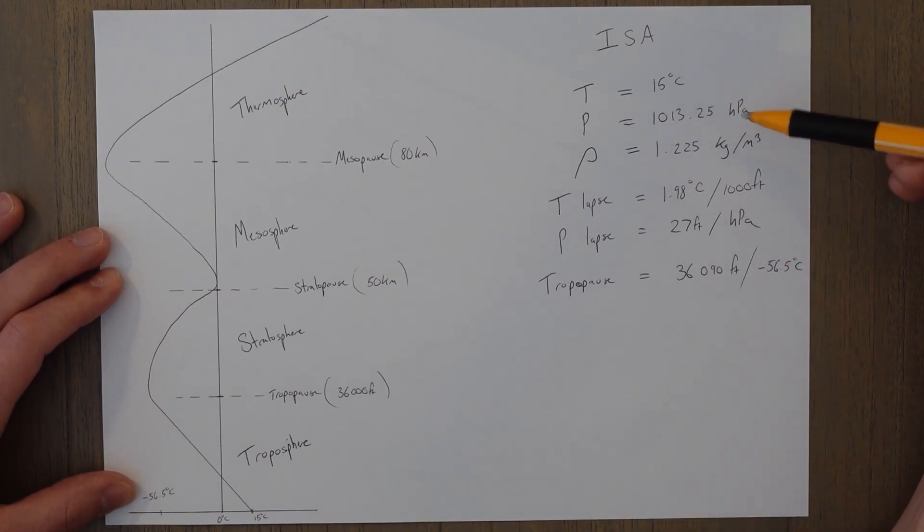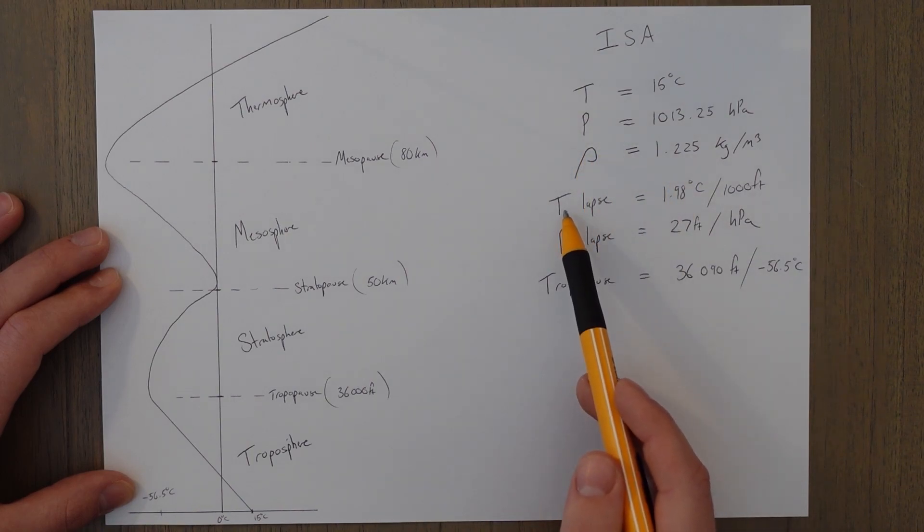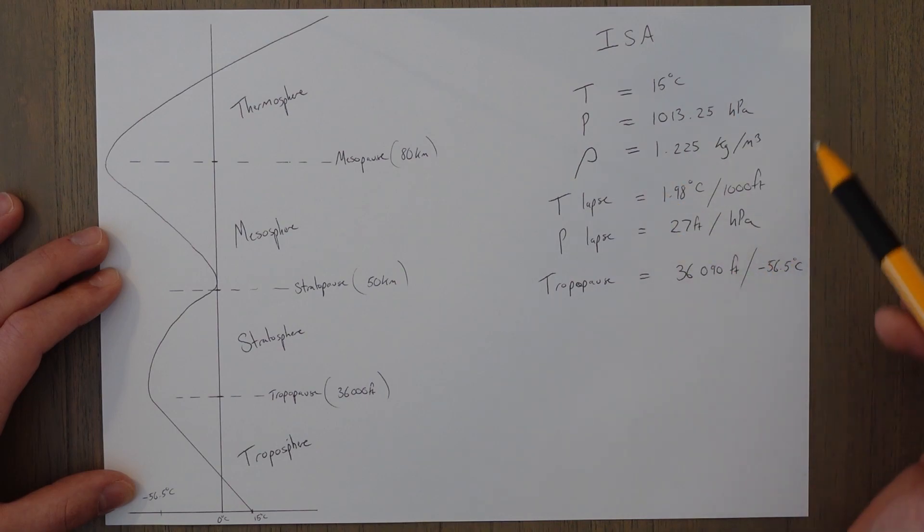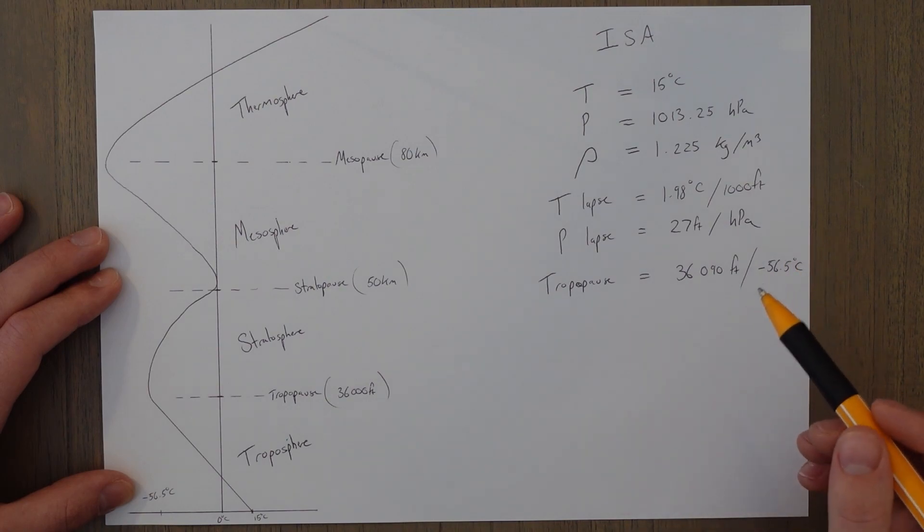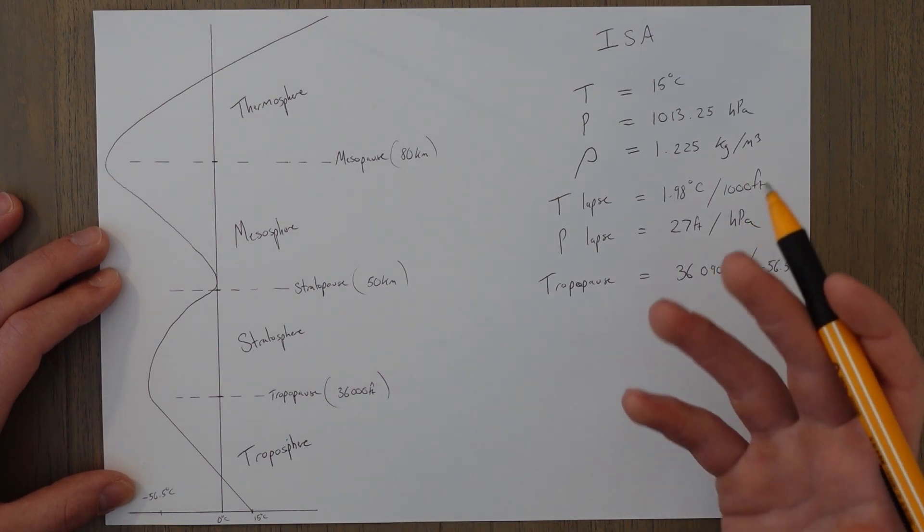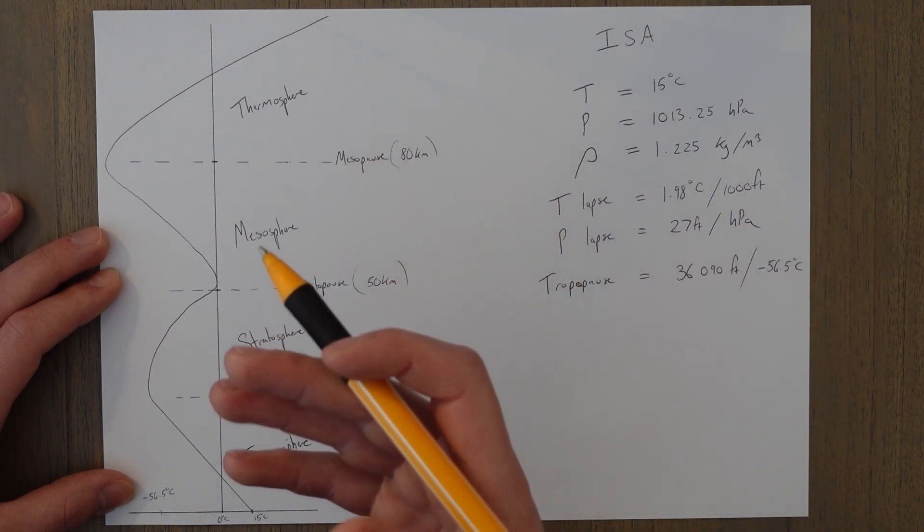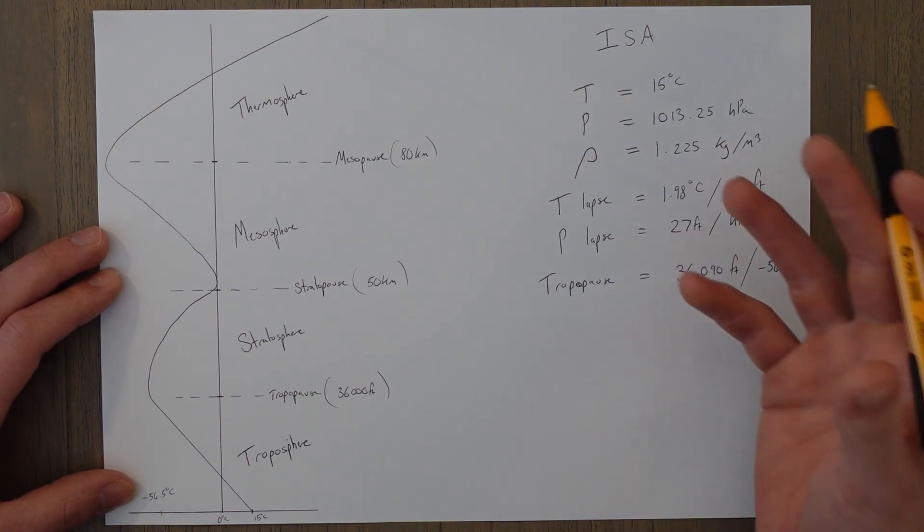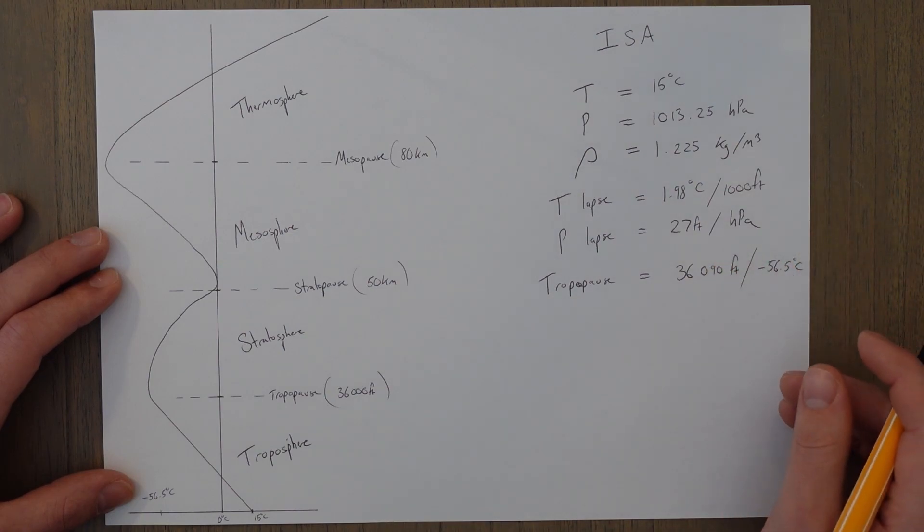We also have the ISA atmosphere which we just talked about with various figures: temperature, pressure, density, temperature lapse rate, pressure lapse rate, and tropopause. Noting importantly that there's no ISA value for humidity—humidity is very dependent on the location that we're in. If we're by the sea it's going to be a lot more humid than if we're in the middle of the desert, for example, but it plays a very large role in meteorology as we'll see in some future classes.